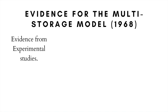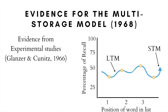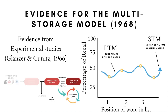Furthermore, evidence from experimental studies with healthy participants has supported the existence of distinct memory stores. A study by Glanzer and Cunitz undertaken in 1966 showed that when participants are presented with a list of words, they tend to remember the first few and the last few words more than those in the middle. These results supported the existence of separate LTM and STM stores: words early in the list were put into the LTM because participants had time to rehearse them, while words at the end went into the STM as participants could actively rehearse those for maintenance.